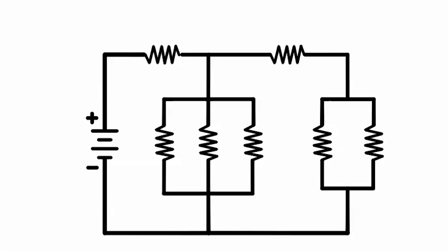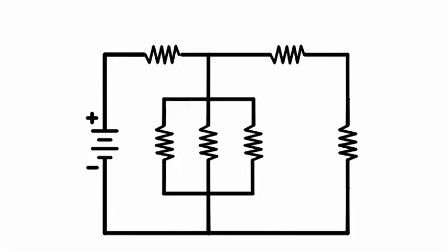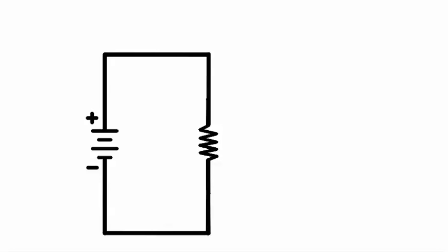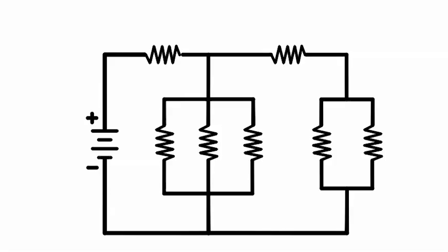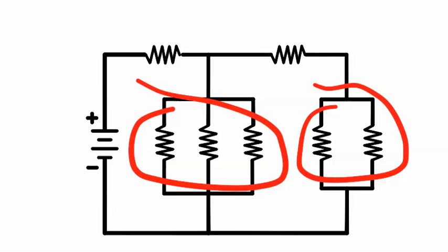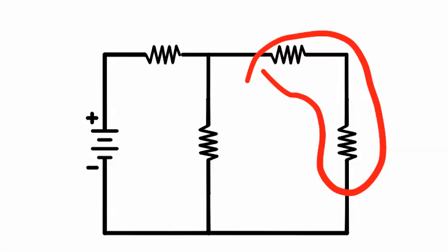We begin by finding the total resistance, and we do this by simplifying the circuit. The procedure is to solve for parallel equivalent resistance first. Then we can add series resistors.